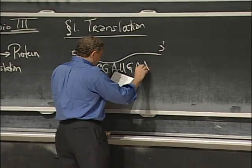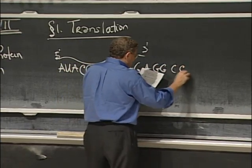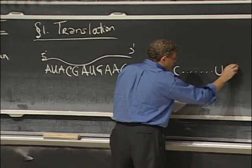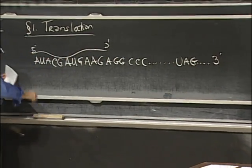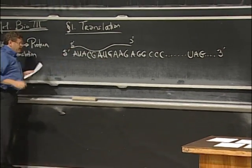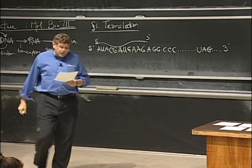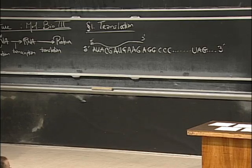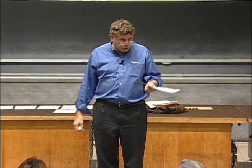...A, A, G, A, G, G, C, C, C... dot dot dot ...U, A, G... dot dot dot 3 prime. All right. Somehow that's going to be translated into a protein. It's translated according to a fantastic lookup table. This lookup table is called the genetic code.